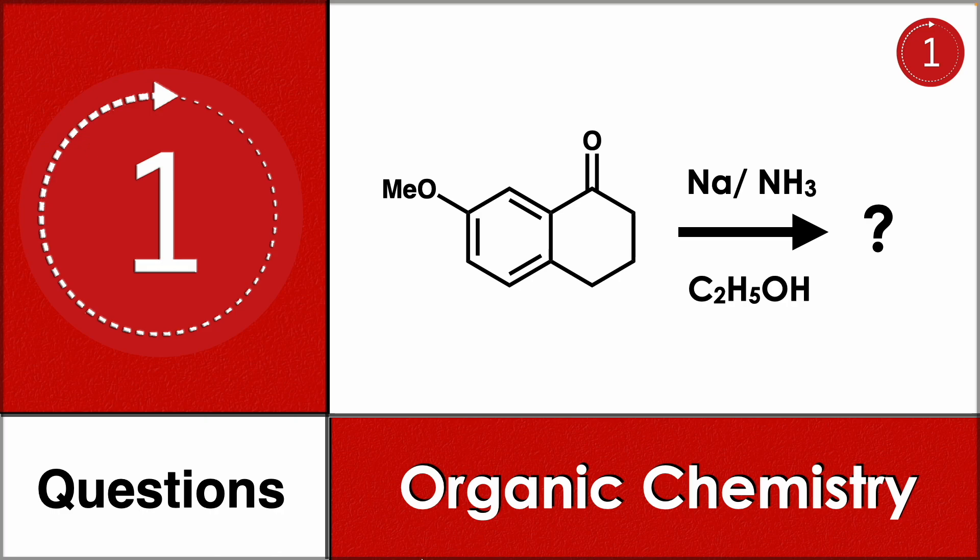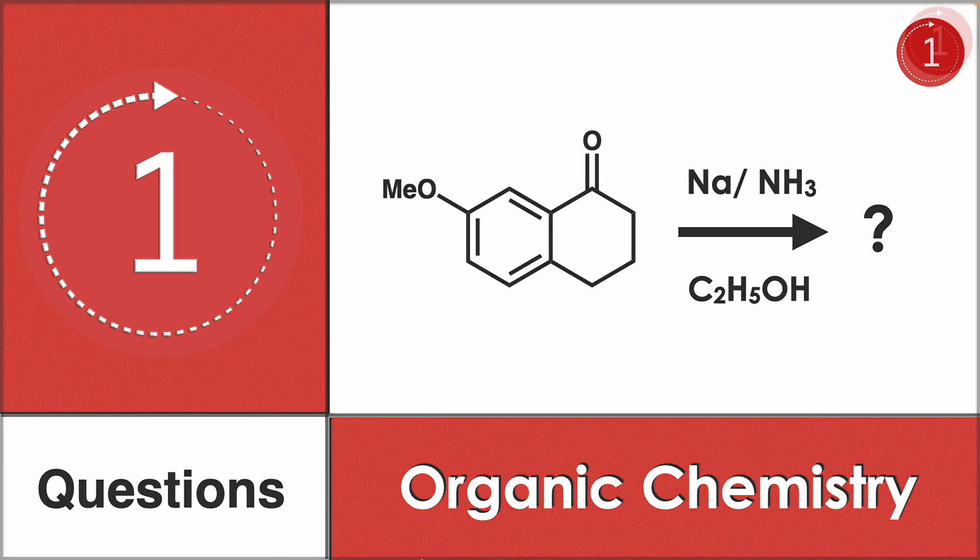Welcome to One Chemistry, this is the organic chemistry series — daily one question for you. Here you have benzene fused with cyclohexanone and a methoxy group, reacting with sodium, ammonia, and ethyl alcohol. You should find what will be the final product.